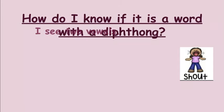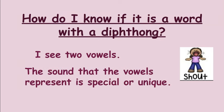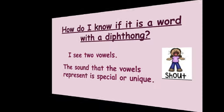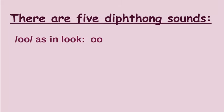How do I know if it's a word with a diphthong? I'm going to see two vowels again, but the sound that the vowels represent is special or unique. There are five diphthong sounds. The first special or unique sound is U as in look. OO is saying U — it's not saying AH, it's not saying O, it's saying U. The sound is special or unique, and that's what makes it a diphthong.